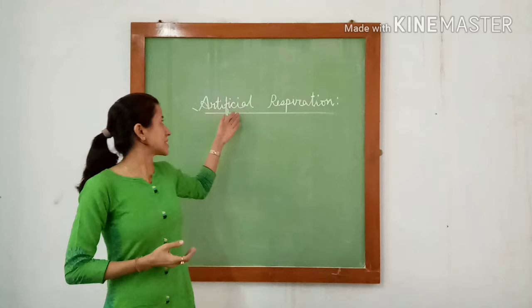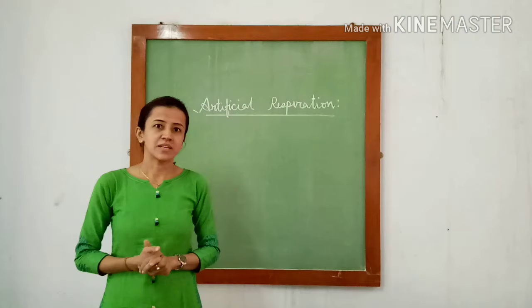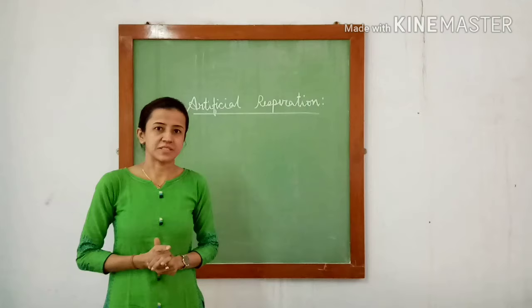Hello everyone. Today we will discuss about artificial respiration. Artificial respiration is indicated when respiration stops but the heart continues to beat. The indications are newborn babies, drowning, poisoning by various gases, and anaesthetic complications.